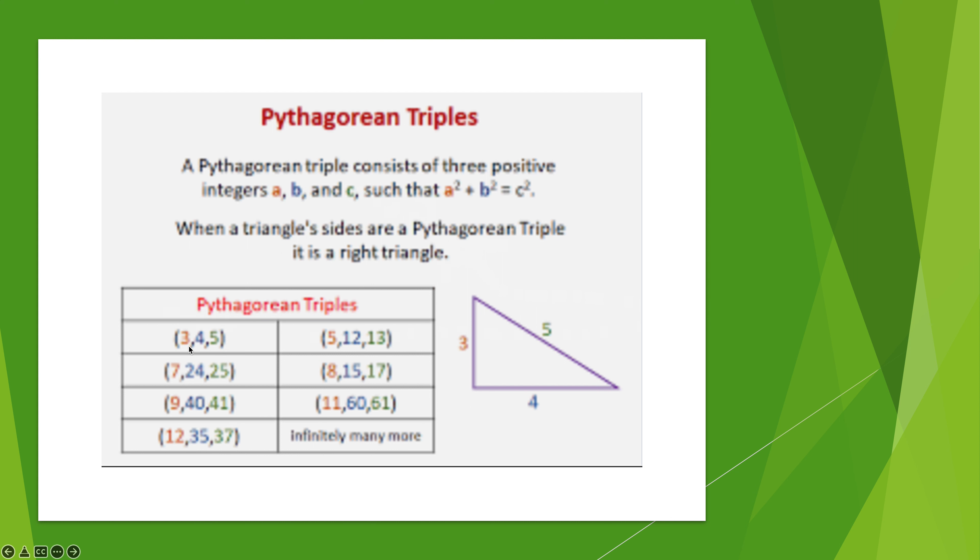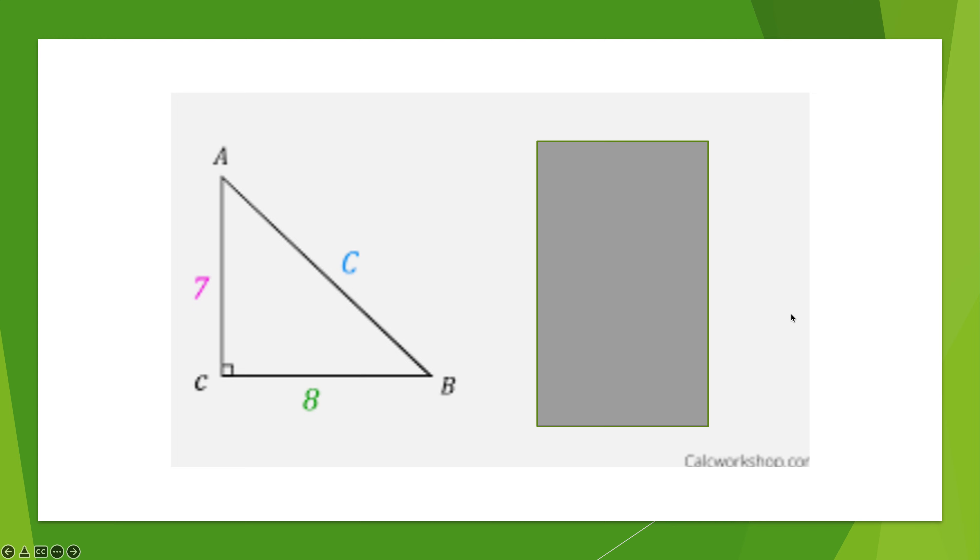And don't forget, the multiples of all of these things work. For example, 6, 8, 10. For this one, I can multiply this by 3: 15, 36, 39. For 8, 15, 17, I can multiply by 2 and get 16, 30, 34. So any multiple of them also works. So this might be one that you want to take a picture of. It will save you a little bit of time, but you can get the answers without ever having these memorized.